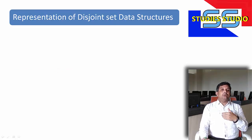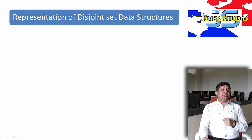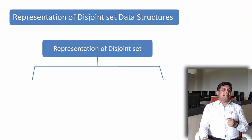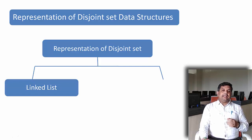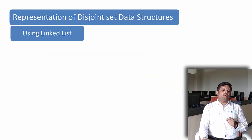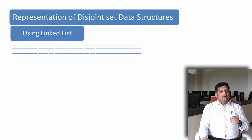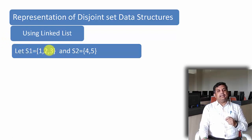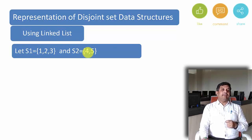Now let us see how to represent disjoint set data structure. Basically, we represent disjoint set data structure by using a linked list as well as by an array. Now let us see how to use a linked list to represent it. Let us say we are having two sets: S1 which contains three elements 1, 2 and 3, and S2 which contains two elements 4 and 5.